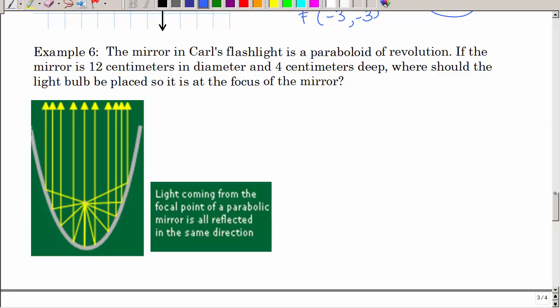Believe it or not, if you've ever taken apart a flashlight and you cut it in half, it's a parabola. And if you were to rotate it, it's called a paraboloid of revolution. That's where you get that kind of shape that reflects all the light. If the mirror, because there's usually a mirror in a flashlight, it's a shiny surface, is 12 centimeters in diameter. So right here is 12 centimeters, and it's 4 centimeters deep. You can see that this is not to scale, I got it off the internet, so if that is 4 centimeters deep.